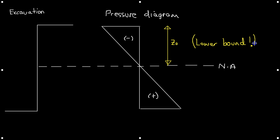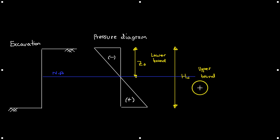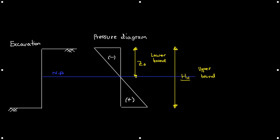Z₀ is the lower bound value for a vertical cut — the safest value to specify as the depth for an unsupported excavation. Up to this depth there would be no plastic deformation of the vertical cut; the soil wall is stable because only cohesion acts, pulling it back with no forces pushing in. The upper bound value is HC — the maximum theoretical depth for an excavation without support — where the negative forces in the pressure diagram cancel out the positive forces, making the overall active lateral earth pressure equal to zero.